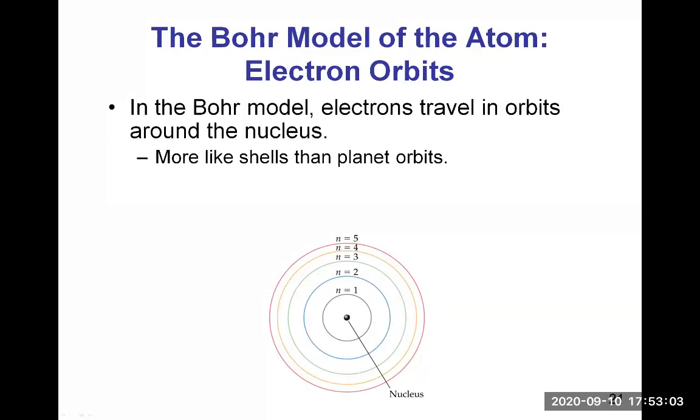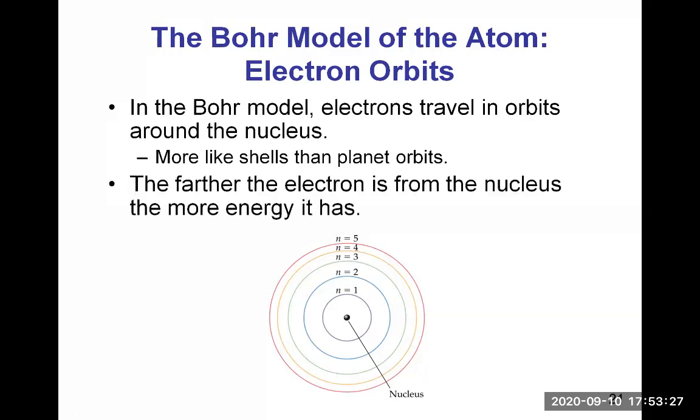You can imagine orbits like shells more than planet orbits. It's not like circles, it's more like an onion shell. It's a spherical envelope, if you will. The electrons roam into that spherical envelope that we call a shell. The farther the electron is from the nucleus, the more energy it has.